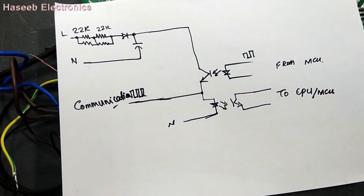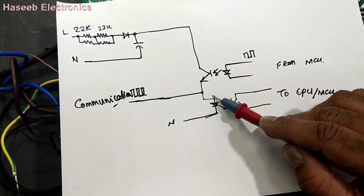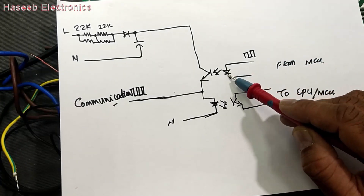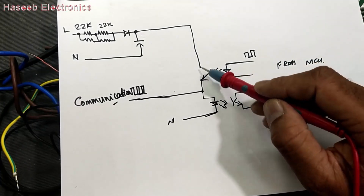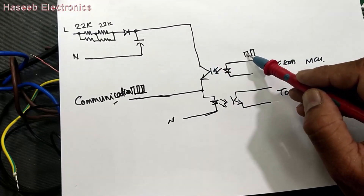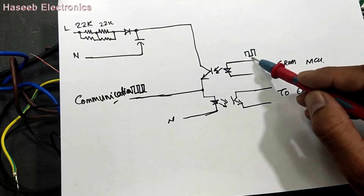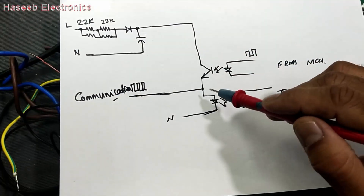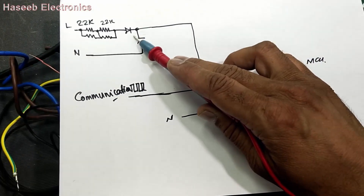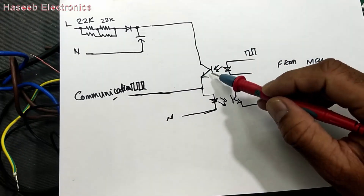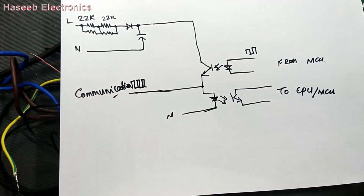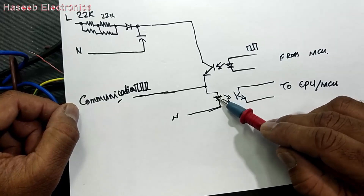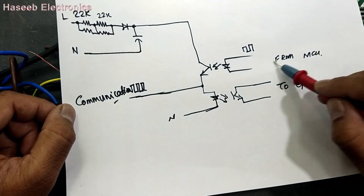Then we have two optocouplers — one is for transmission and the second for reception. When this board wants to send some data, it will activate the LED in the transmit optocoupler and it will switch these voltages: the low voltage signal is up to 5 volts, and the high voltage signal based on the power supply is 56 volts — so it will send a 56-volt signal. If it has a 20-volt or 25-volt power supply, it will send a 25-volt signal. When we receive some data from the indoor unit, the receive optocoupler will work and it will go into listen mode — talk mode and listen mode.